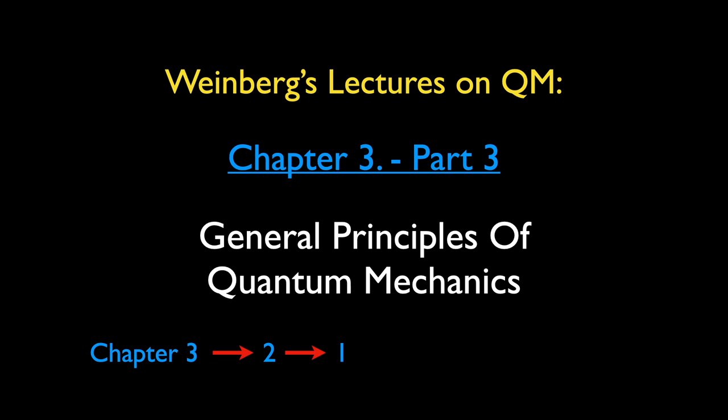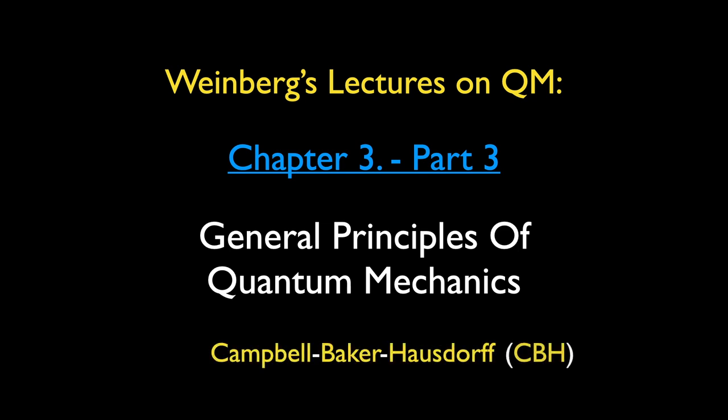In the last lecture, we introduced the continuum states, discussed the position and momentum operators, and ended up deriving the famous Heisenberg's uncertainty relation. Today we shall talk about symmetries in quantum mechanics, which is an important topic in theoretical physics. The highlight of this lecture is probably the proof of the Campbell-Baker-Hausdorff formula, which is perhaps the key equation in group theory — the mathematics behind symmetries. We shall arrive at the complete proof of this theorem by the end of this lecture.